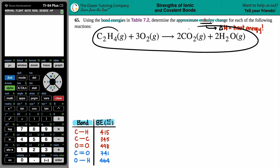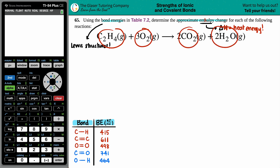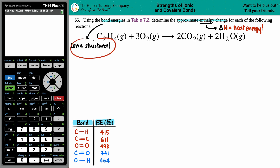Looking at this equation, I don't see any bonds written out. So if you need to find ΔH using bond energies, I highly recommend drawing the Lewis structures — even though it's one more step — because only the Lewis structures will tell you what specific bonds are in each compound. Pause the video if you want to try drawing the Lewis structures for C₂H₄, O₂, CO₂, and H₂O. We have tons of videos on this channel dedicated to drawing Lewis structures step by step.